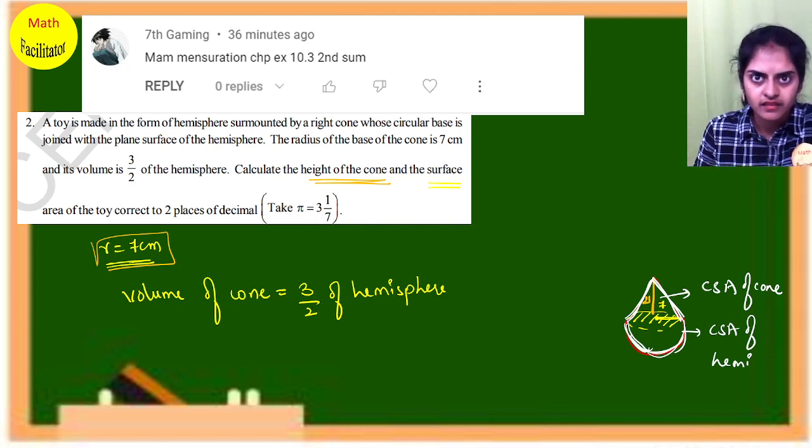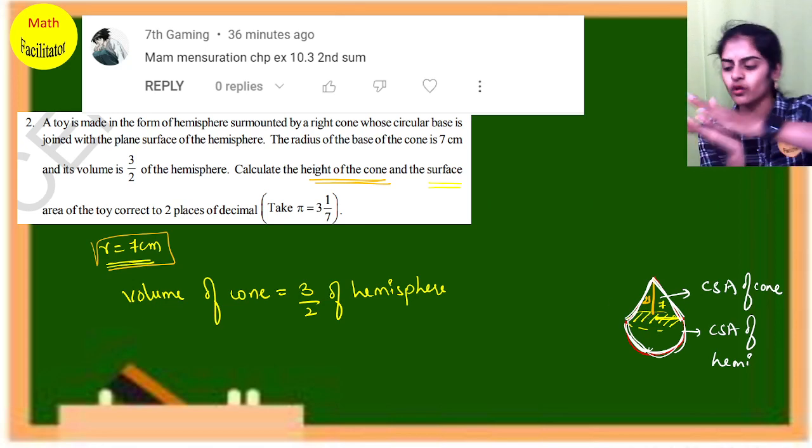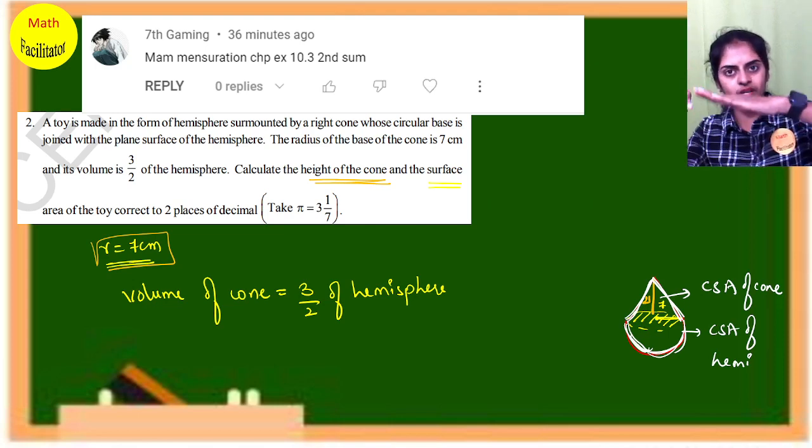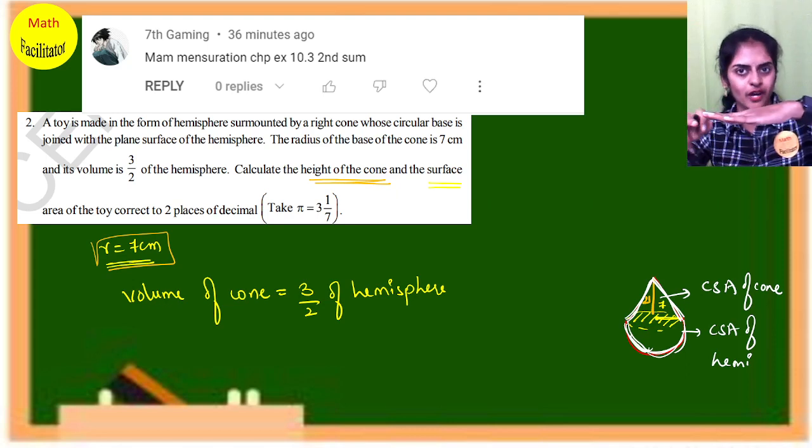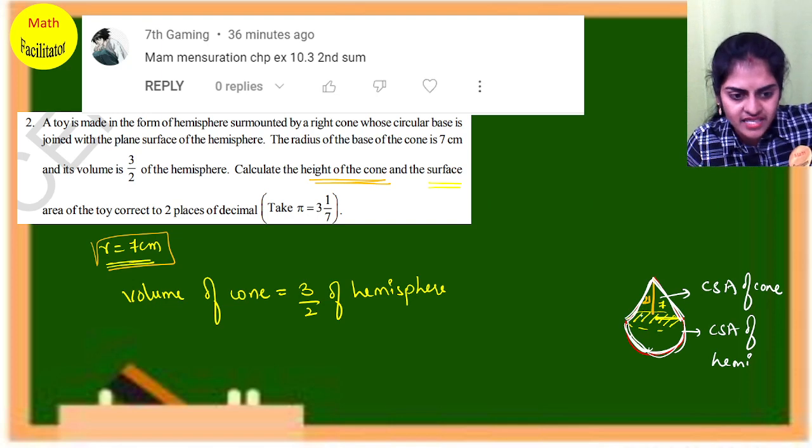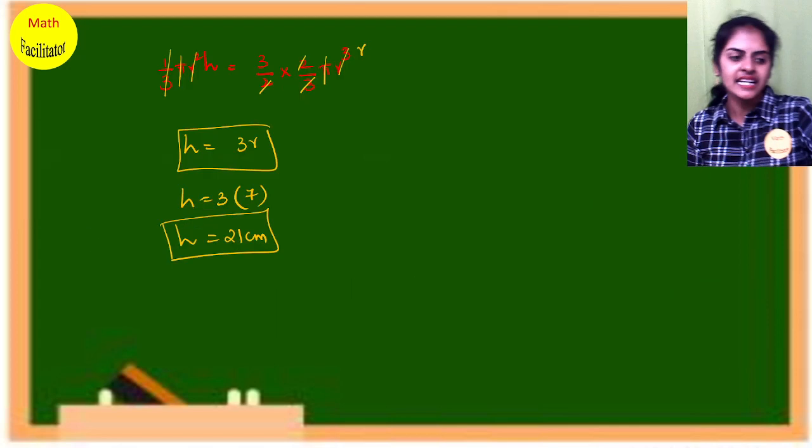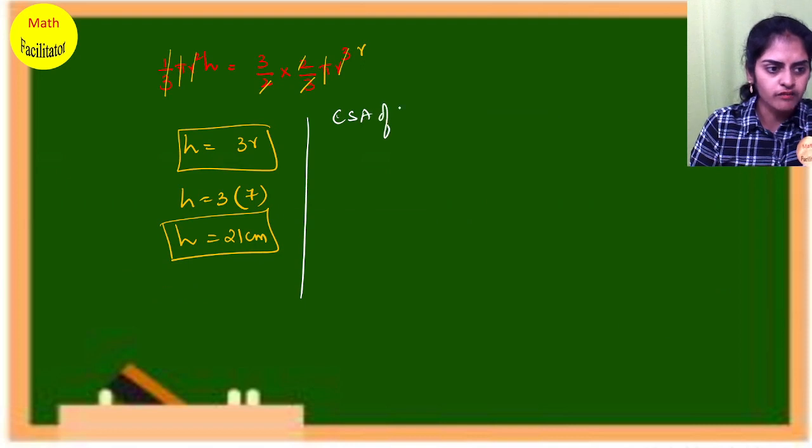CSA of cone plus CSA of hemisphere will give me the surface area of the total toy. This inside yellow portion you will not take because that is not the surface—both surfaces are joined now. This circular region you will not consider because it is not a surface now, it is inside.